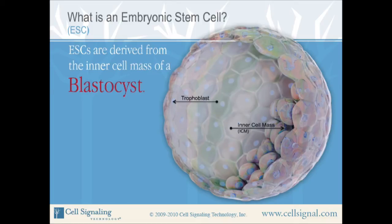Embryonic stem cells have two unique features. First, they are pluripotent. This means these cells can differentiate into all three primary germ layers, namely the ectoderm, mesoderm, and endoderm. Additional information regarding these germ layers will be presented in later slides.